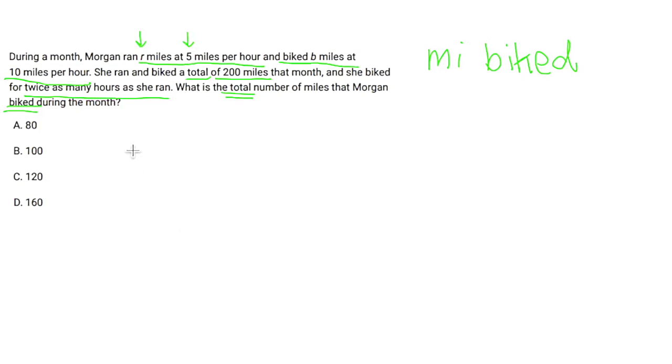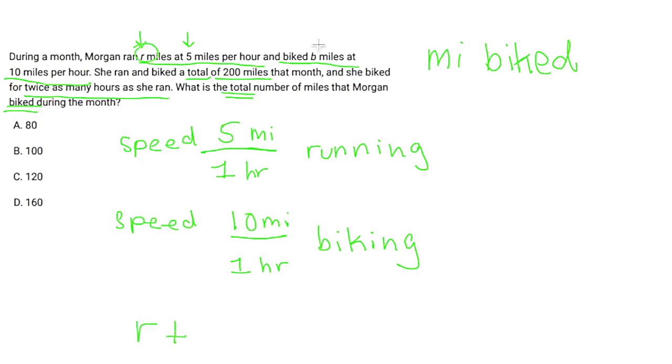So we have a couple of relationships going. We have a rate or a speed of 5 miles per 1 hour for running. And we have a speed of 10 miles per 1 hour of biking. We also have a relationship between the total number of miles that she ran and biked. So the total between running, which is R, and biking, which is B, is 200. And the last part of this is that she biked for twice as many hours as she ran. So B hours is equal to 2 times R hours.